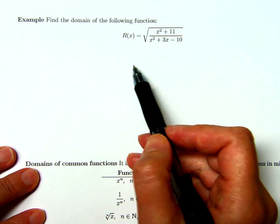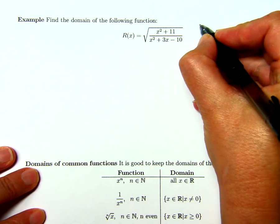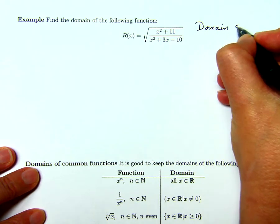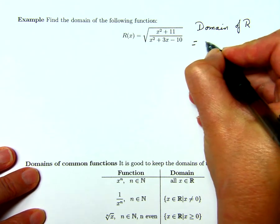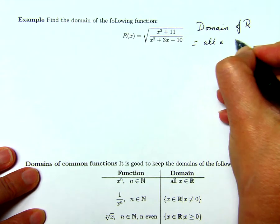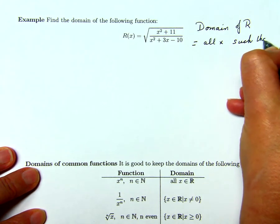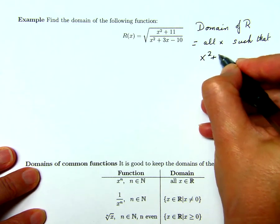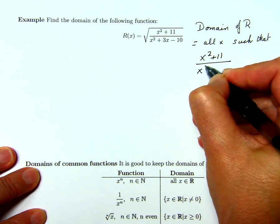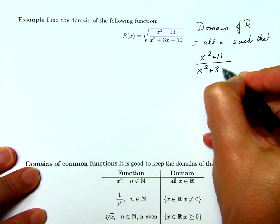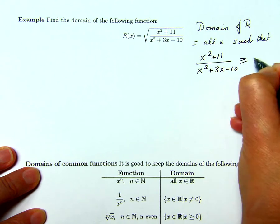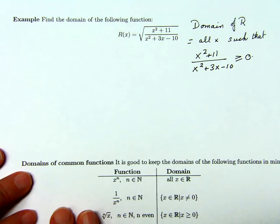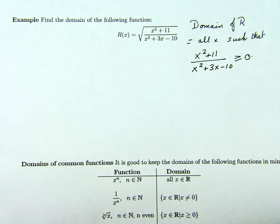Remember the domain is all x which makes sense in the formula, so the domain of the function r is equal to all x such that what's under the square root sign is both defined and greater than or equal to zero. I'm just going to write greater than or equal to zero there because I'm assuming that also means it's defined.